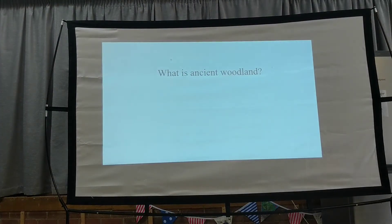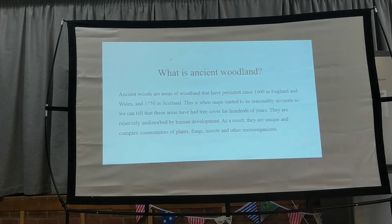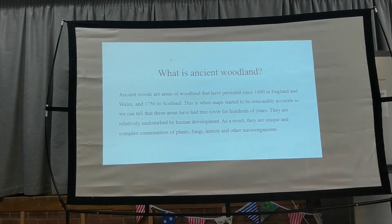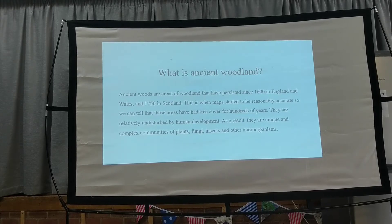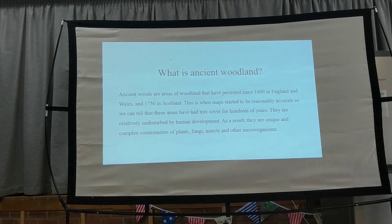So what is ancient woodland? Kent Wildlife Trust defines it as ancient woods and areas of woodland — this is through national guidance as well. A quick scan through that will show how they define ancient woodland: it's persistent since 1600, it doesn't have to be the same piece of woodland, it has to have a tree frame, and you're looking at the diversity of plant matter within it. They are relatively only disturbed by human development, and as a result they are unique and complex communities of plants, fungi, insects, and other microorganisms.